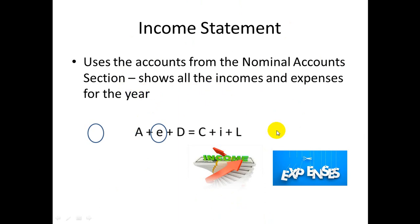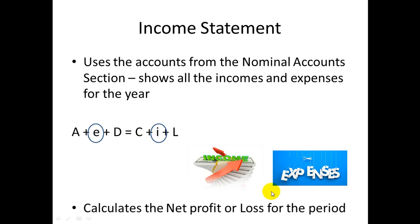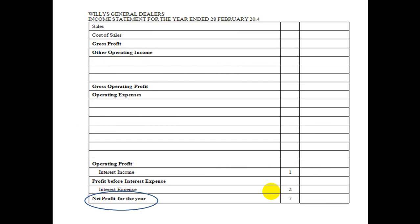Here comes our extended accounting equation — you can see that the nominal account section and the income statement are fed from expenses and incomes. The income statement calculates the net profit or loss for a period. This is what an income statement looks like: for example, a general dealer's income statement for the year ended 28 February — they've traded a whole year, and this shows the net profit for the year at the bottom.